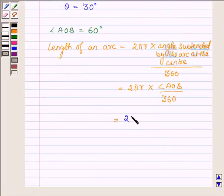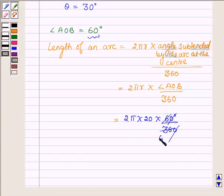2 into π, radius of the circle is equal to 20 centimeters, into angle AOB is 60 degrees upon 360. Zero cancels out and we have 6 into 6 is 36. 2 threes are 6, so we have 20π upon 3.